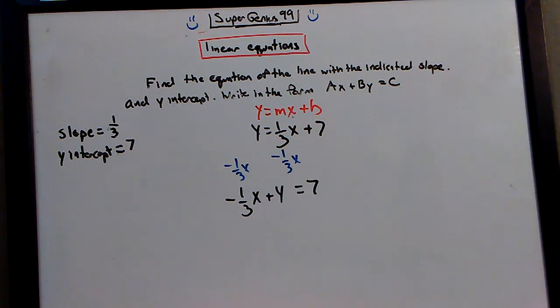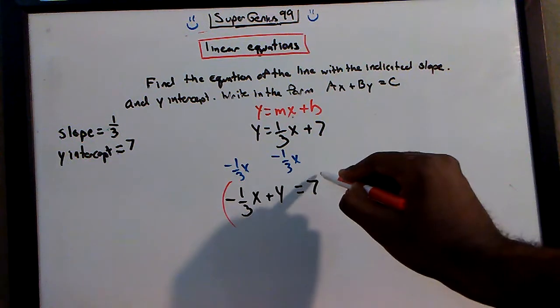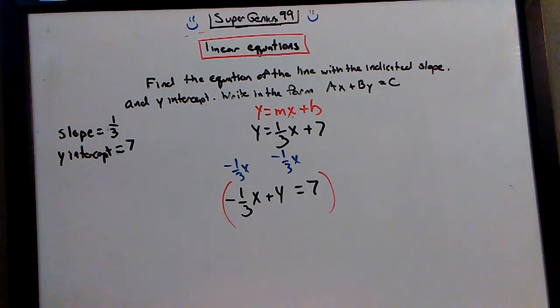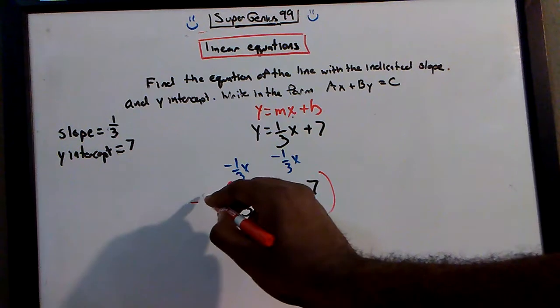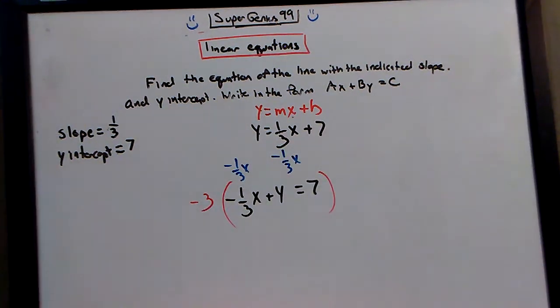And most times we like the x to be positive and a whole number. So how do I make x a positive and a whole number? It definitely has to be a whole number, but positive as well. I'm going to multiply everything by a negative 3. So watch what happens when I multiply everything by a negative 3.